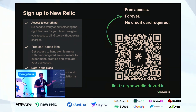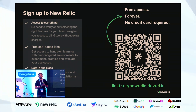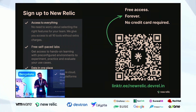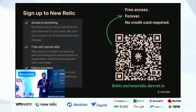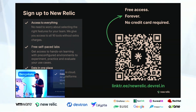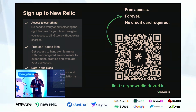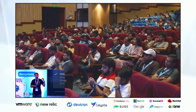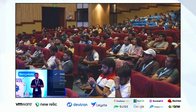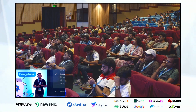We also have self-paced labs and workshops. If you want to get hands-on with New Relic or an OpenTelemetry workshop, you can play around at your own time — it's available for free for everyone. You just need an account for Instruqt, a third-party tool we use to create these labs. That's all I have for today. Please scan the QR code because we are also running a contest where you can win an iPad. Thank you.